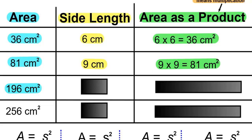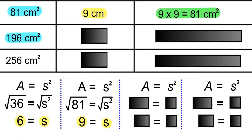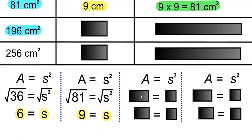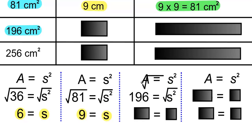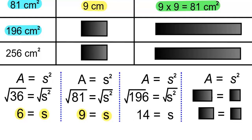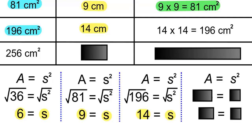In the next example, the area is 196 centimeters squared. Area equals side squared. 196 equals side squared. Take the square root of side squared and the square root of 196. The squared and square root cancel, giving us S, and the square root of 196 is 14. So S equals 14. The side length is 14 centimeters. And the area as a product will be 14 times 14 equals 196 centimeters squared.